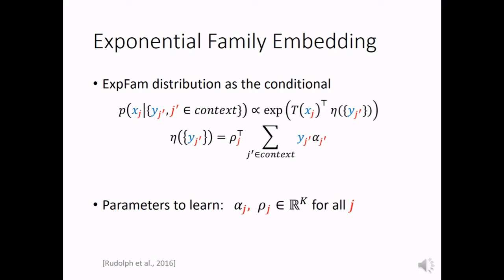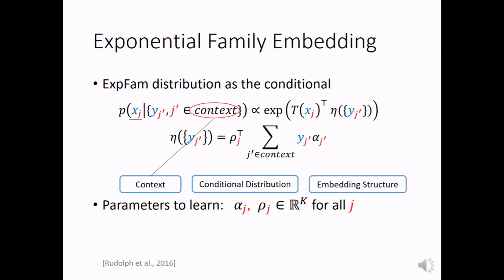Exponential family embedding uses an exponential family distribution as the conditional we just discussed. It has three ingredients. The first ingredient, context, defines the context of an item j and its count. The context is a set of related items and their counts.